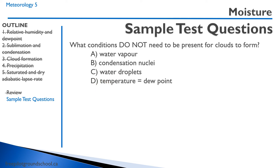Question: what conditions do NOT need to be present for clouds to form? Option A, water vapor — we do need water vapor for clouds to form. Option B, condensation nuclei — we need condensation nuclei, something for the water vapor to condense onto. Option C, water droplets — that's not correct; we don't need water droplets for clouds to form; clouds form and then you get water droplets. Option D, temperature equals dew point — the air has to be saturated for condensation to occur. The correct answer is C, water droplets.